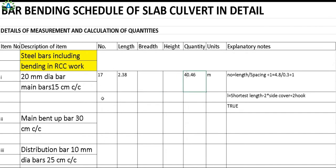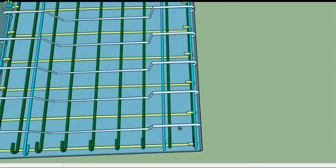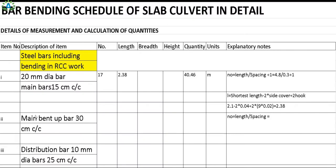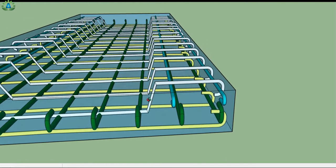For the main bent up bars at 30 centimeter center to center spacing, we use the formula: total length divided by spacing, without adding 1. The longest side is 4.8 meters divided by 0.3 meters spacing, giving a total number of 16 bent up bars.